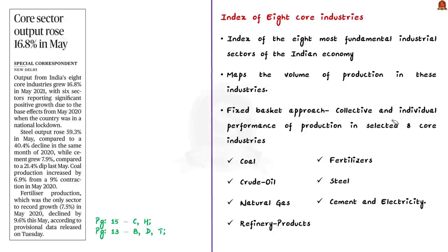This small economics news article states that core sector output has grown at around 17%, and experts say it is because of the base effect. The base effect is the impact of either an increase or decrease in growth compared to the previous reference year.